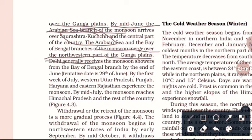Delhi generally receives monsoon showers from the Bay of Bengal branch by the end of June. By the first week of July, western Uttar Pradesh, Punjab, Haryana, and eastern Rajasthan experience the monsoon.